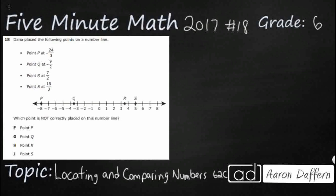So Dana has got four different points here on the number line: negative 24 thirds, negative 9 halves, 7 halves, and 15 thirds, and we need to find the one that is incorrectly placed. So this seems like a pretty straightforward problem here. We have a number line that is only in integers, and we have a whole bunch of points that are shown as fractions, specifically improper fractions.